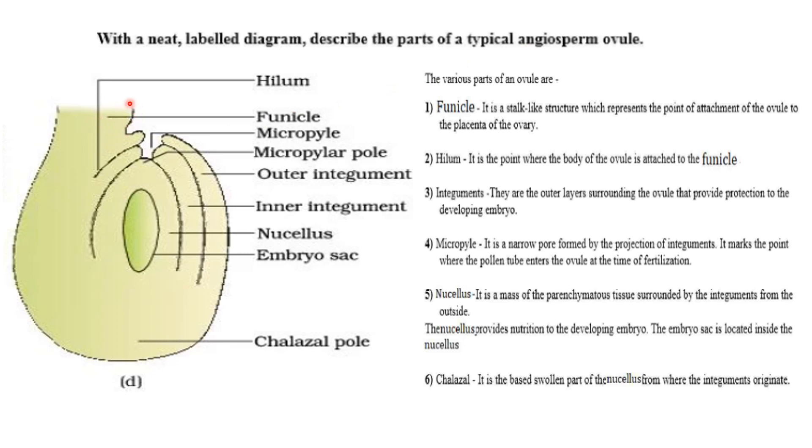Funicle: it is a stalk-like structure which represents the point of attachment of the ovule to the placenta of the ovary.